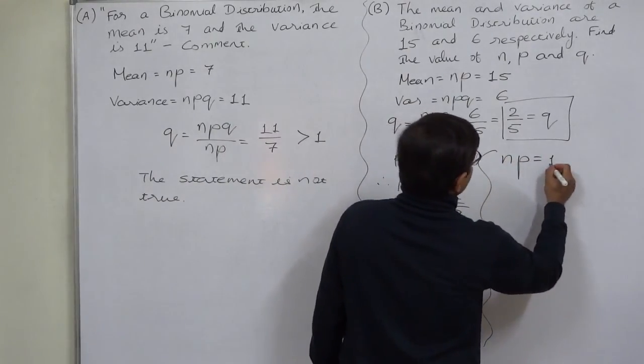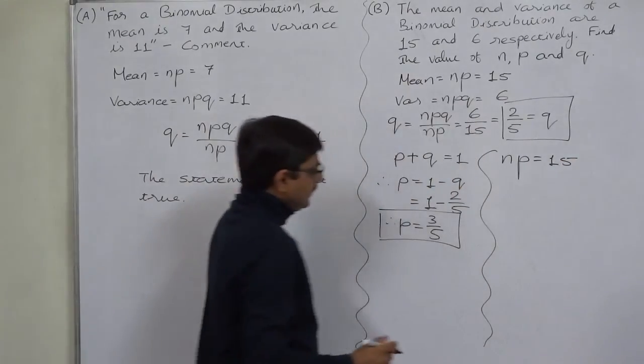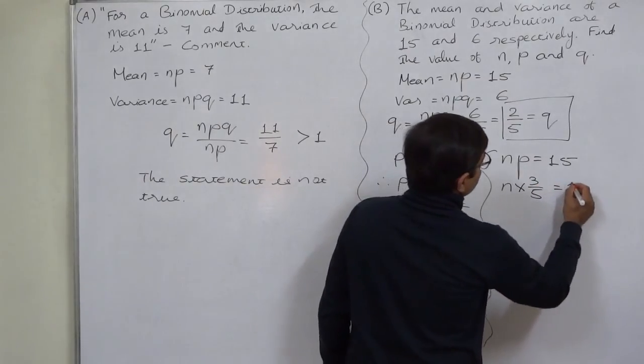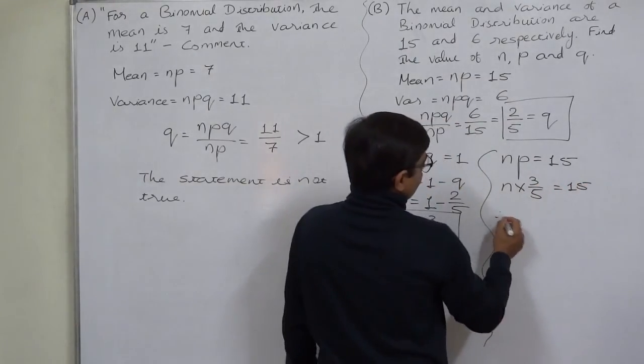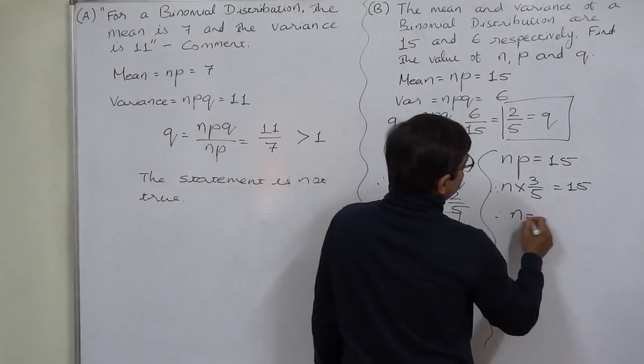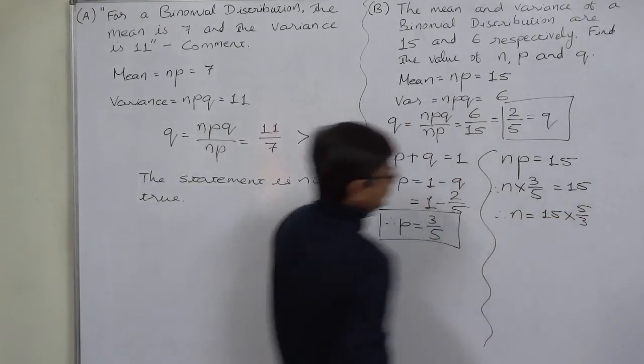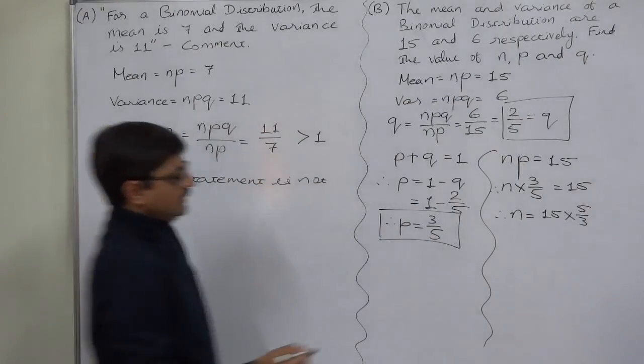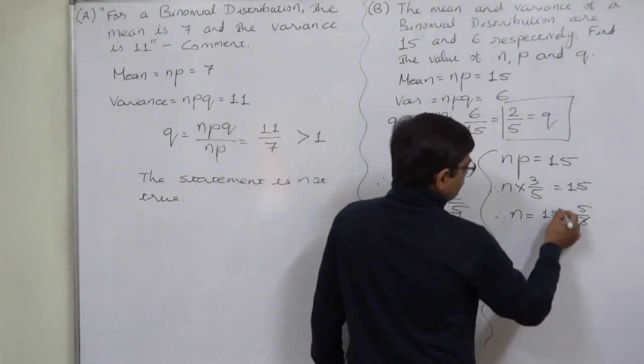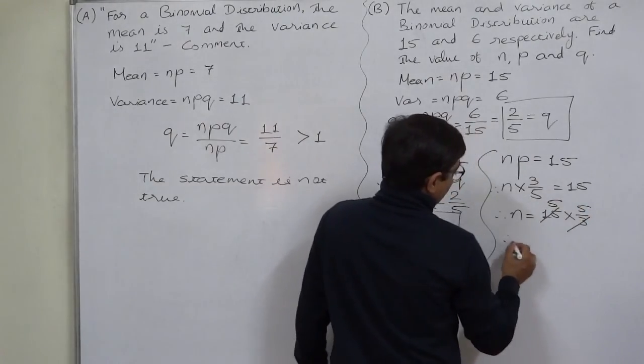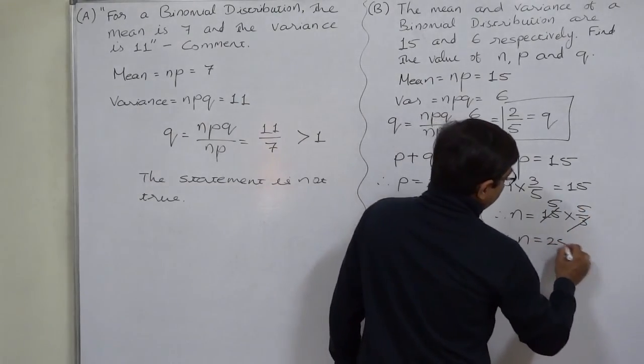Again we know that mean or NP equals 15. Now we can say that n times 3 by 5 equals 15. So n will be 15 times 5 by 3. Cancel 3 with 15, so now we have n or the number of trials of this particular binomial case are 25.